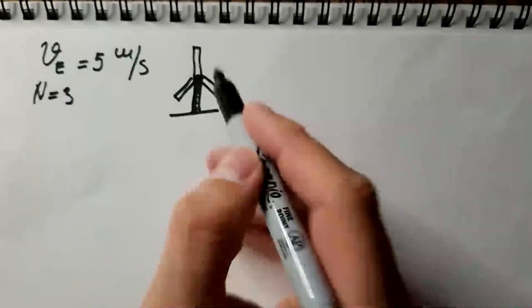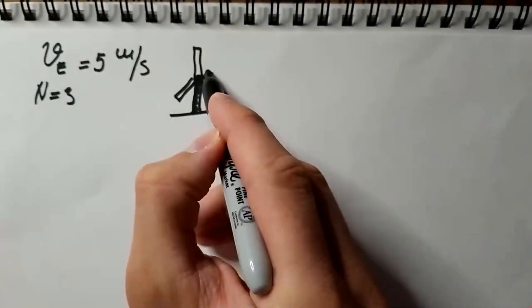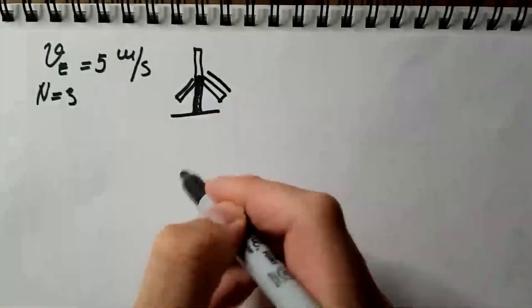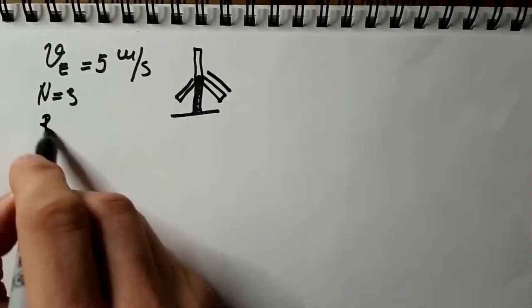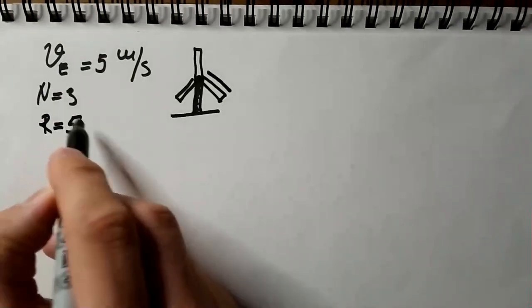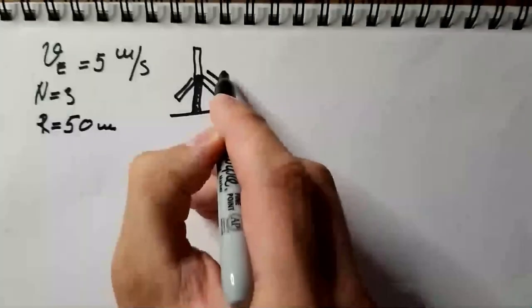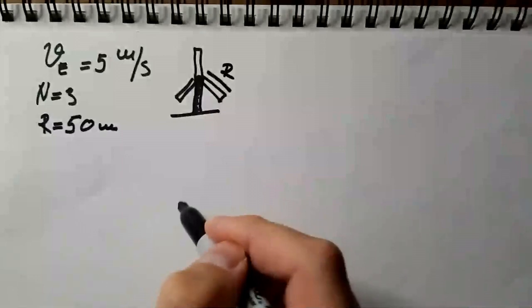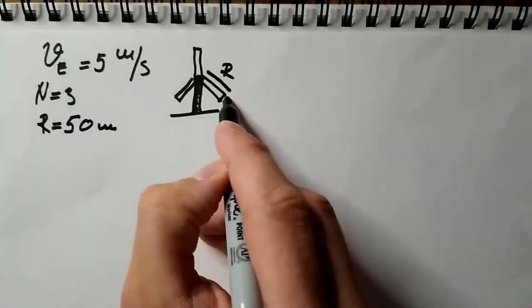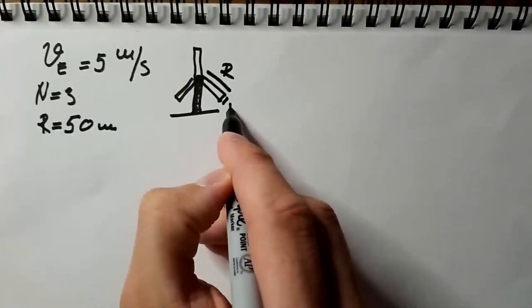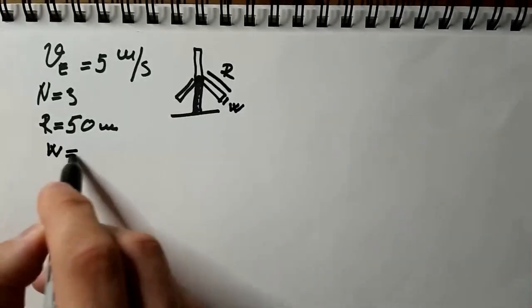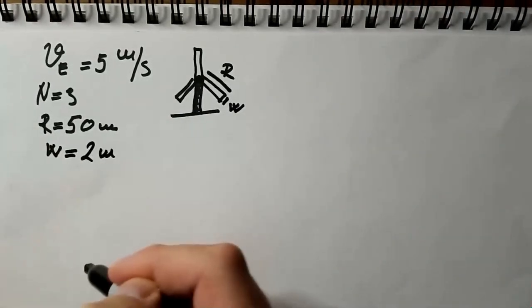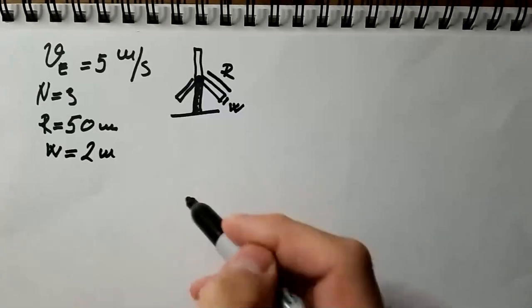Let's assume further that the radius or the length of this blade is 50 meters, r=50m, which is a typical radius. Further, let's assume that the width of the blade w is 2 meters.